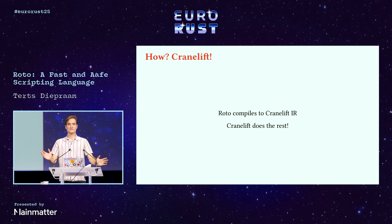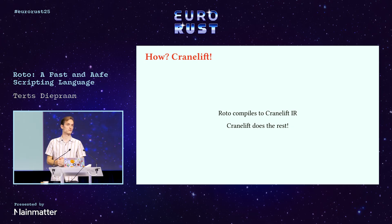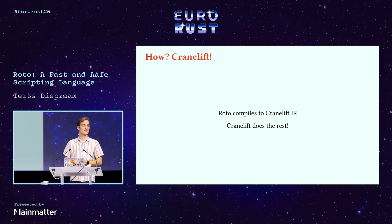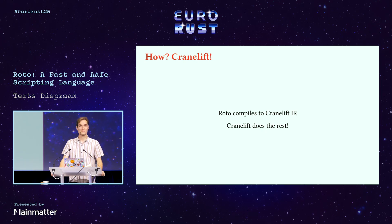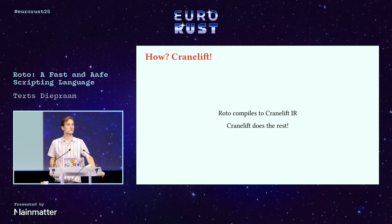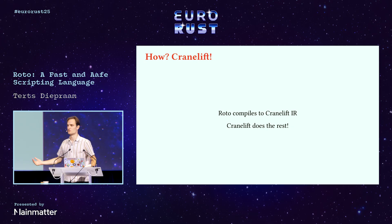So how do we do that? There's this beautiful project called CraneLift. You might have heard about it as the CraneLift backend for Rustc. CraneLift is a compiler backend, just like LLVM. It makes some different trade-offs, but crucially it is a Rust crate I can include in my dependencies really easily. It comes from the WasmTime project where they use it to compile and run Wasm. Roto compiles to CraneLift IR, and then CraneLift compiles it all the way down to machine code.